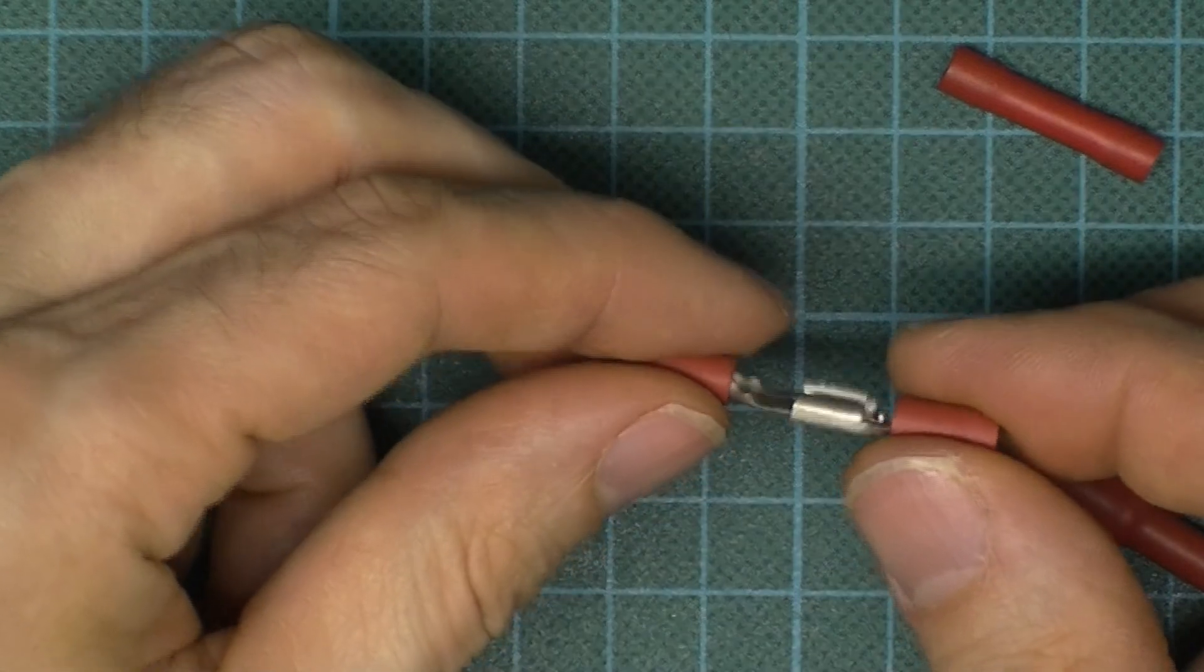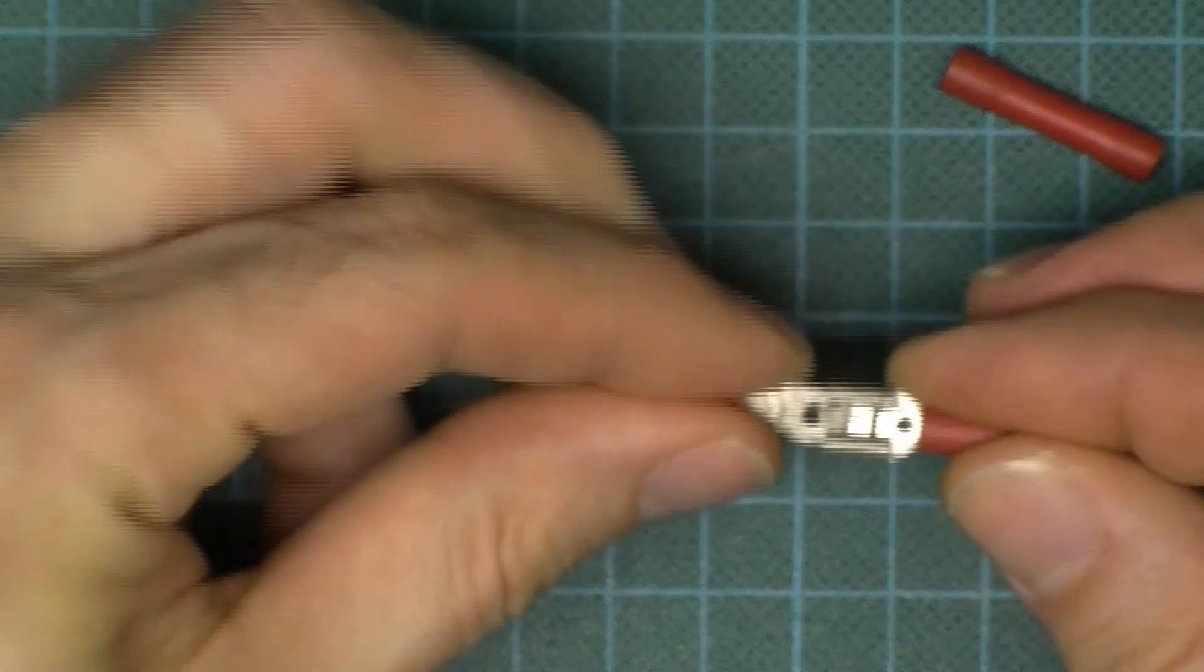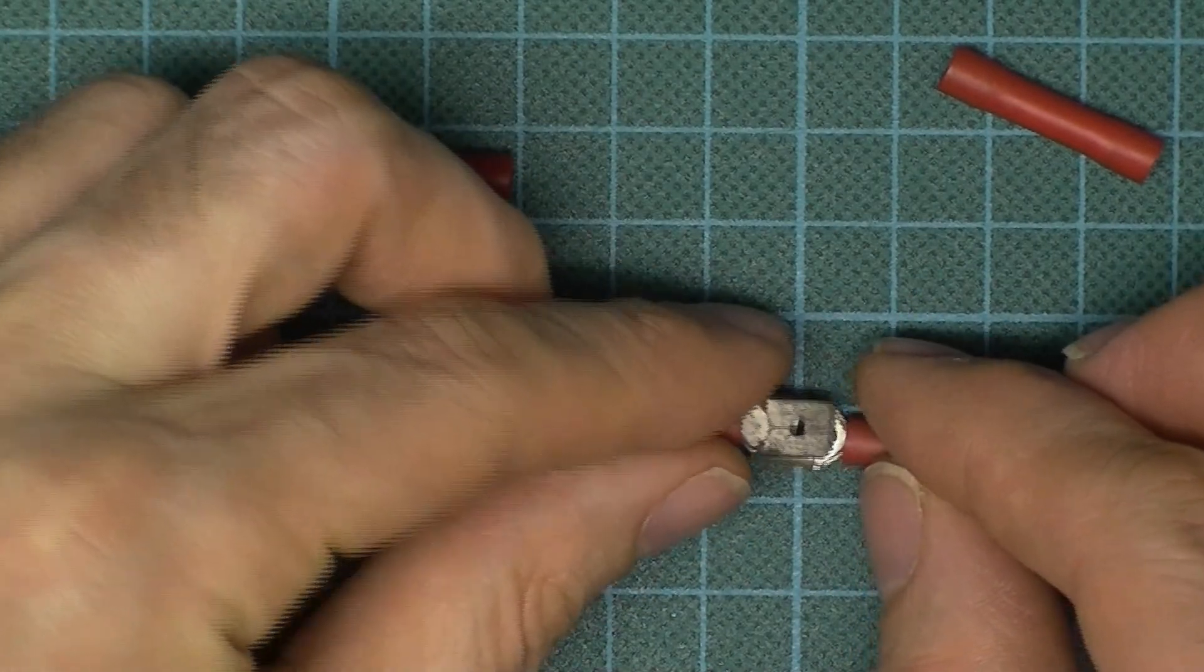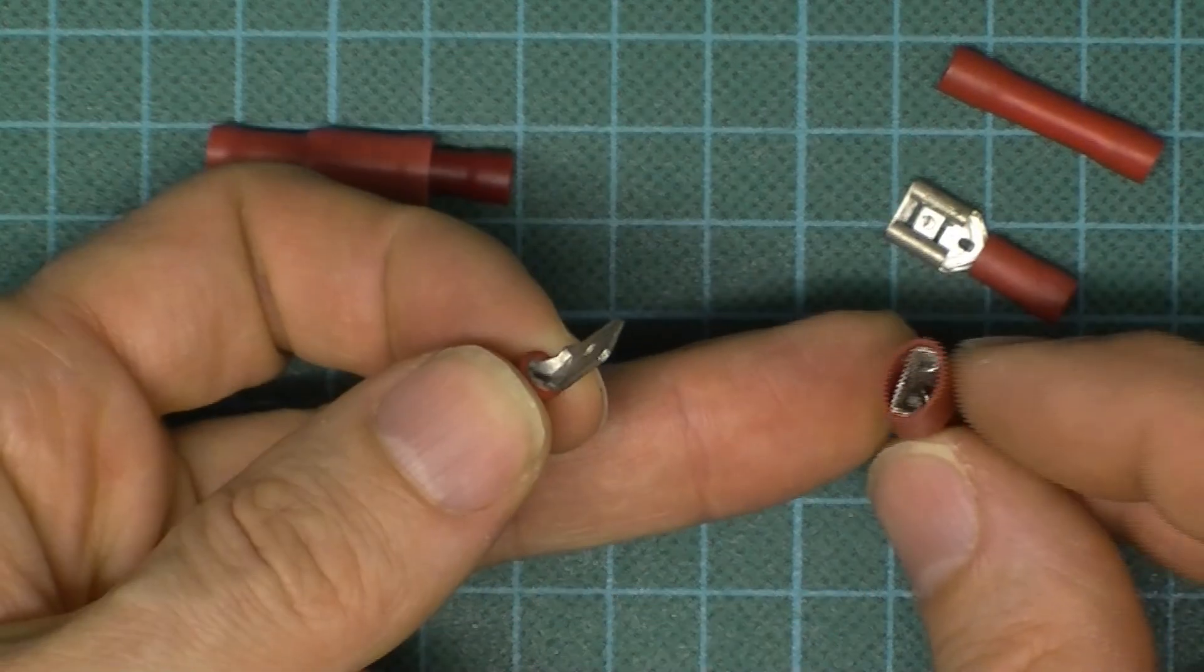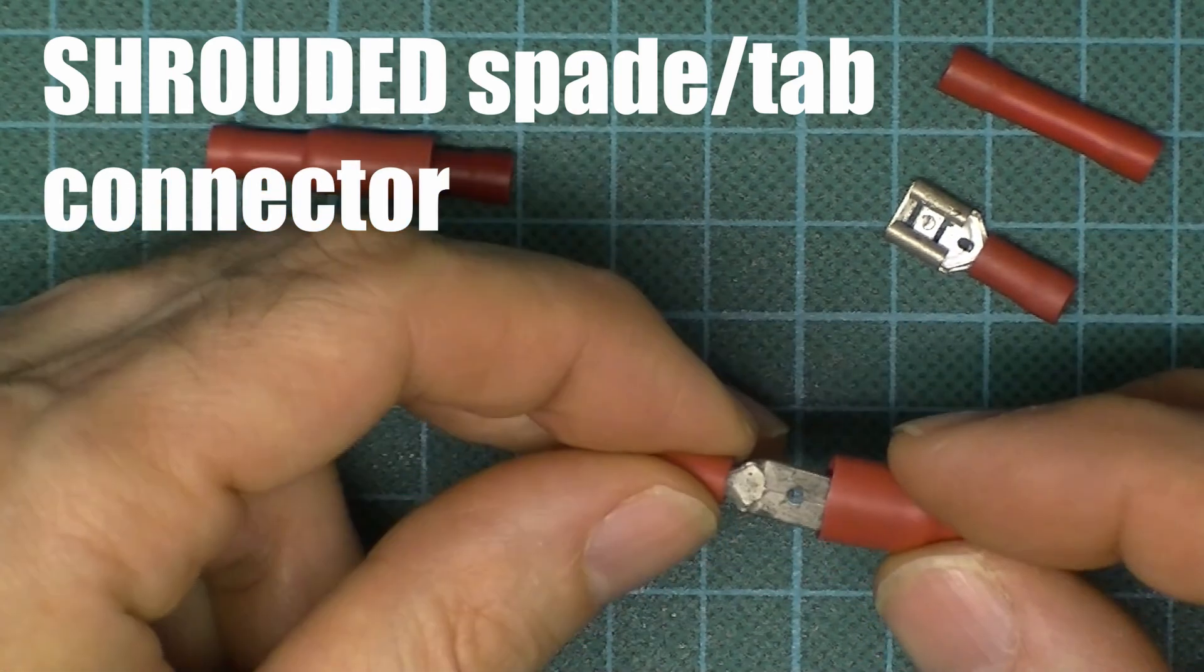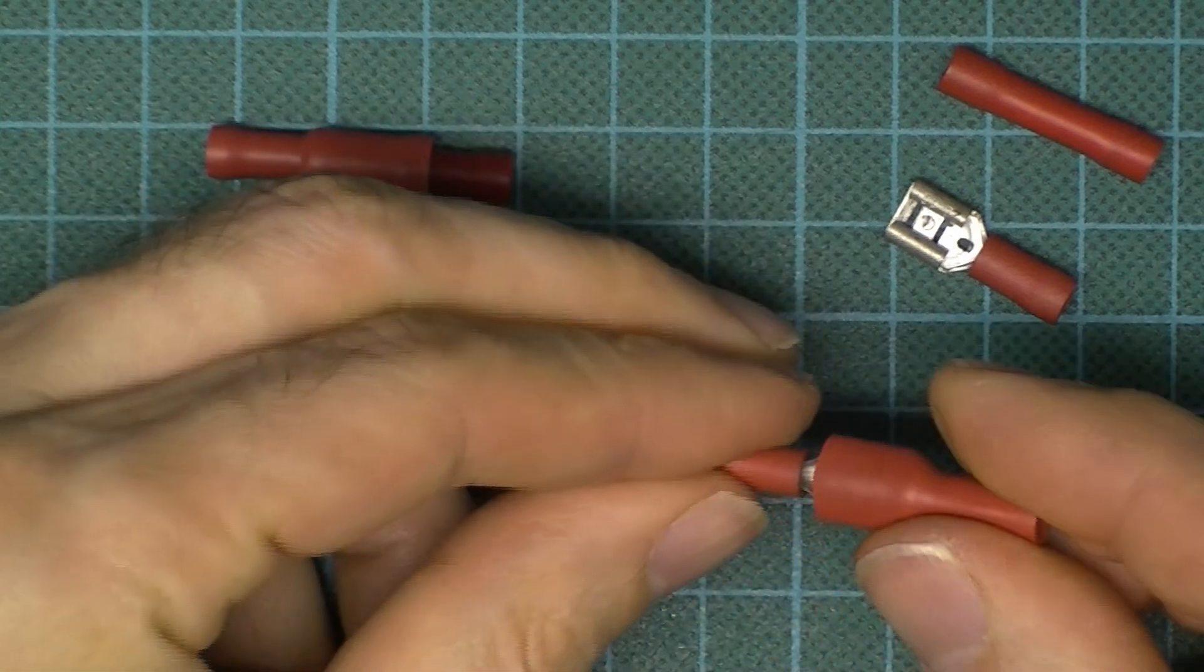I'm not going to push them fully home because they're quite stiff, as they should be really because they should be nice and tight so they won't fall apart. But you can see that when they're together, that would easily short out on something. So if that is a concern, you can get this type which is shrouded, so that then when it's pushed fully home, that reduces the chance of it shorting out on anything.